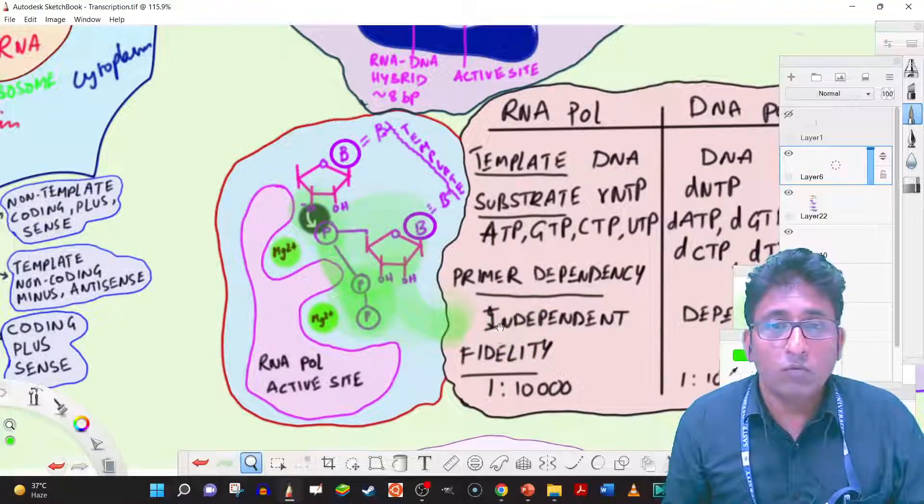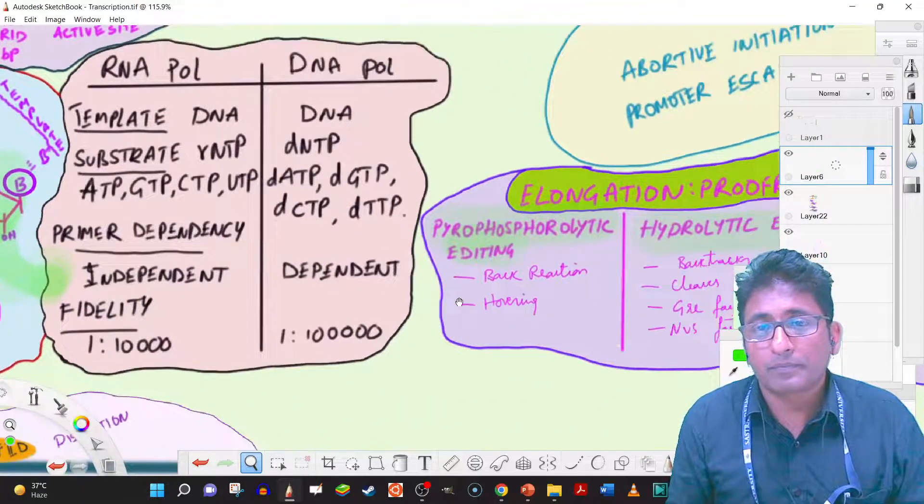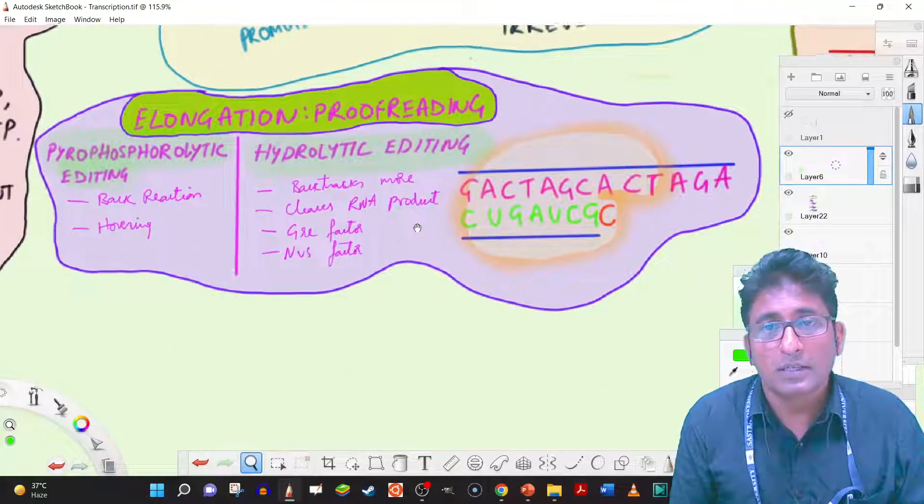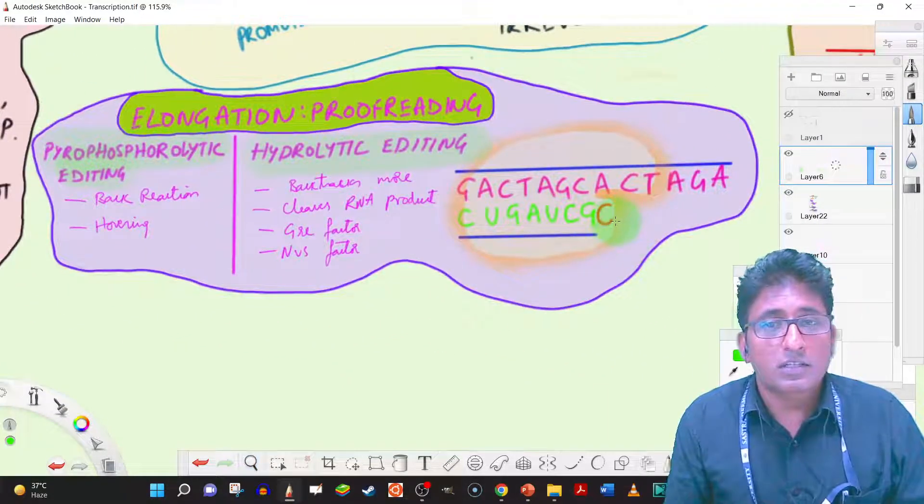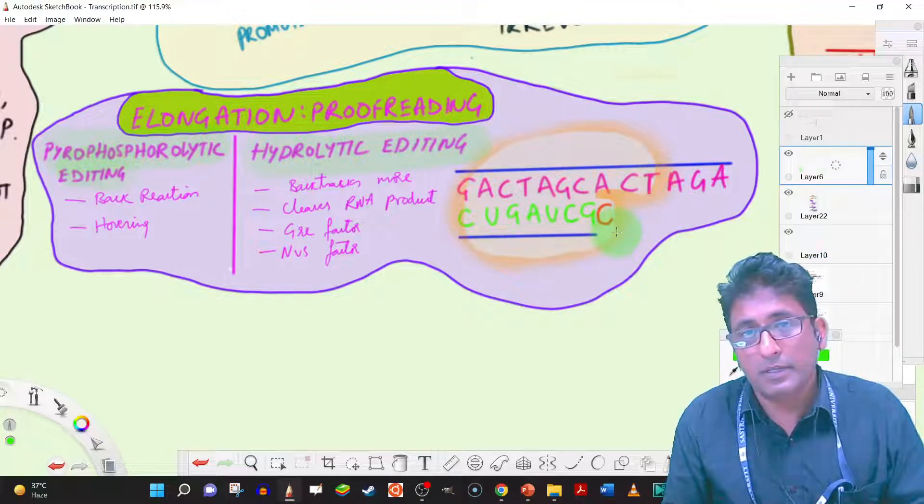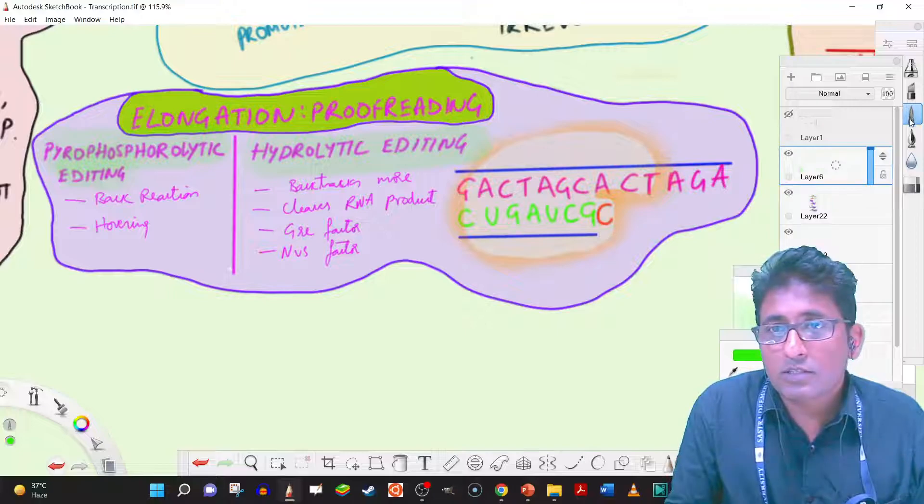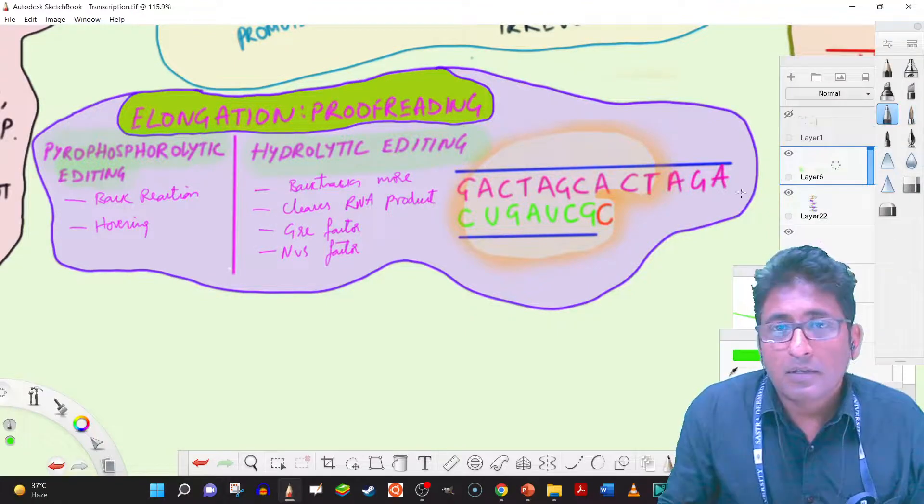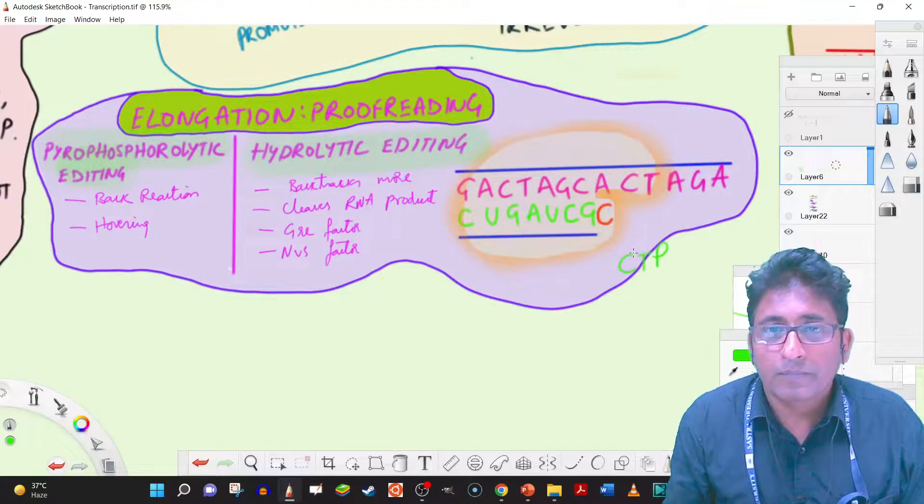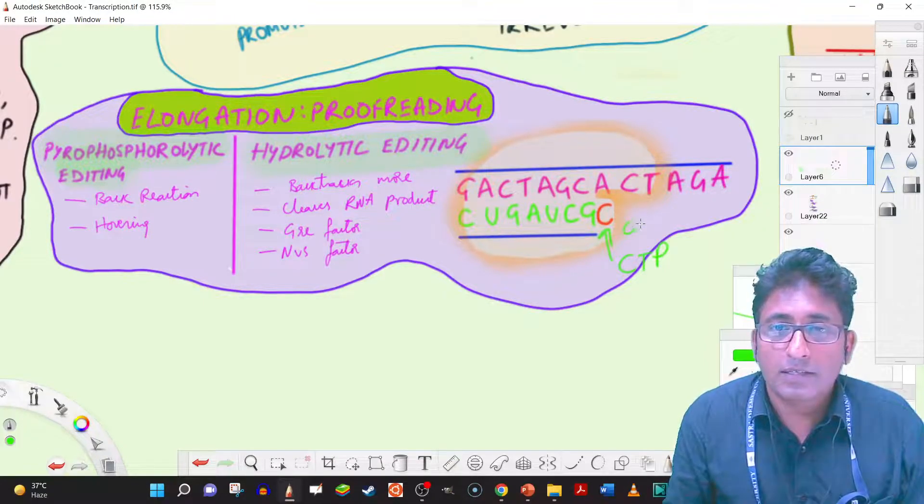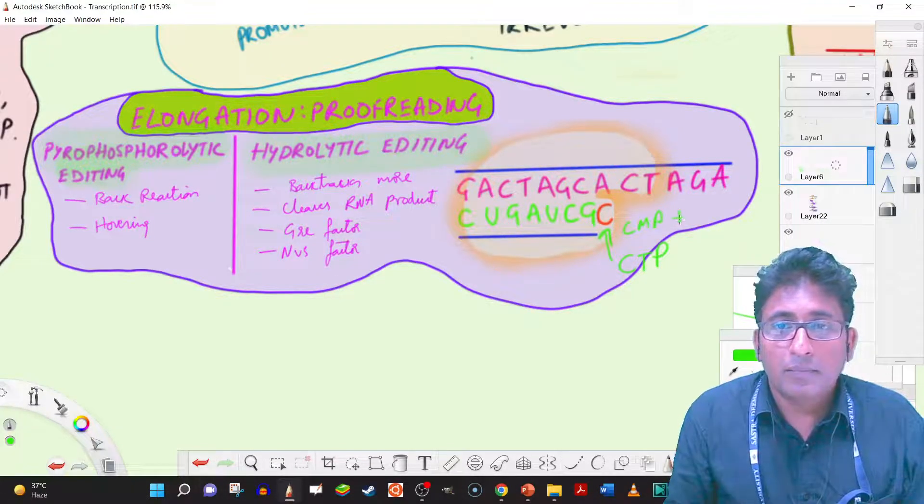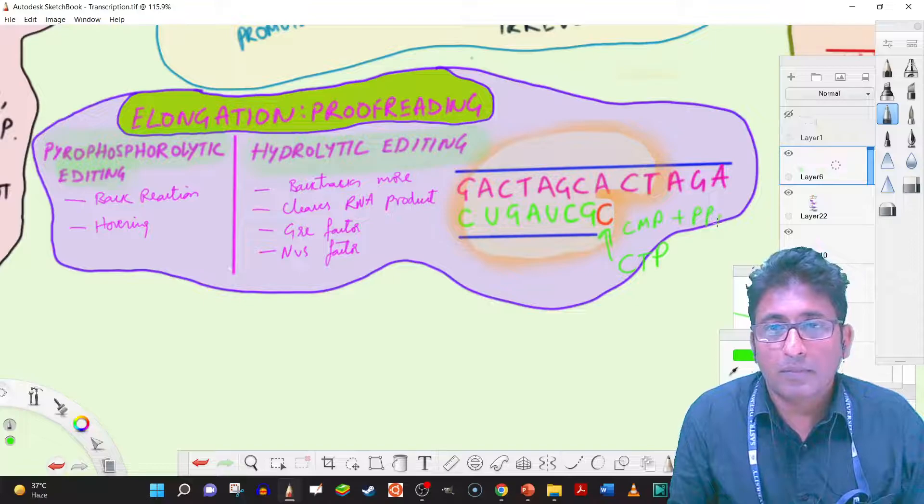So that it will give a new chance for the correct base to come. Say for example, in this case, the cytosine, with CTP. Let's just try to write it up. Say we had initially we had CTP. So when it got added, it is like CMP added, of course, and pyrophosphate, PPi.